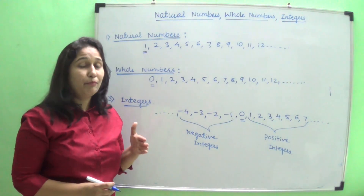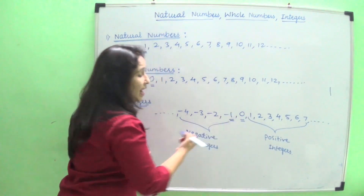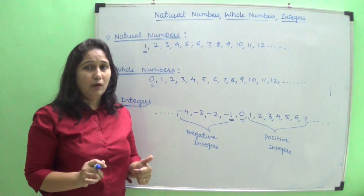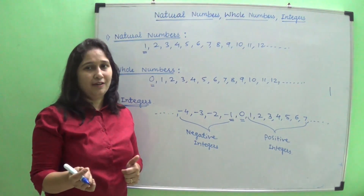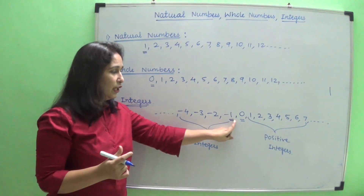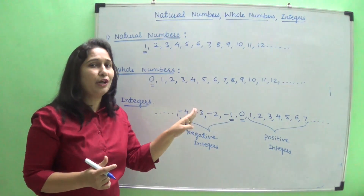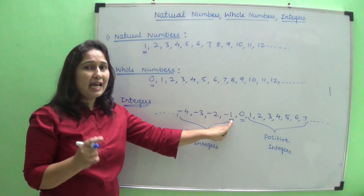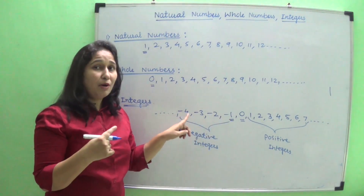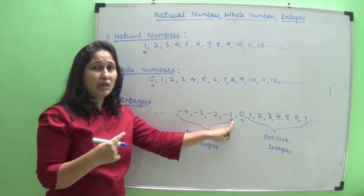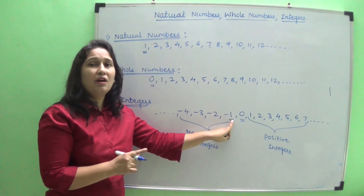When we talk specifically about negative integers, the highest negative integer is minus 1. Minus 1 is the highest negative integer. The negative numbers start from minus 1 and extend left, and minus 1 is the last number located on the right side of the negative integers. Since numbers increase as we move right, minus 1 is the highest among the negative integers.